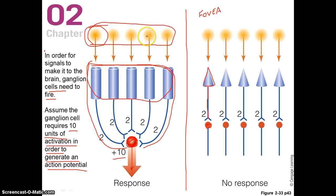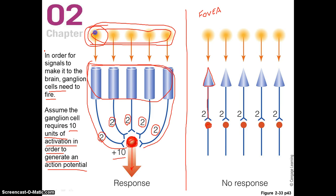Let's assume there are several spots of light out in the environment, and each spot of light stimulates a corresponding rod. These are fairly weak lights — not very intense — so each light only causes about 2 units of activation in each rod. The question is: even though each rod is only weakly stimulated by this dim light, will it be enough to trigger the ganglion cell, which has the final say in whether or not you perceive anything in the outside world?